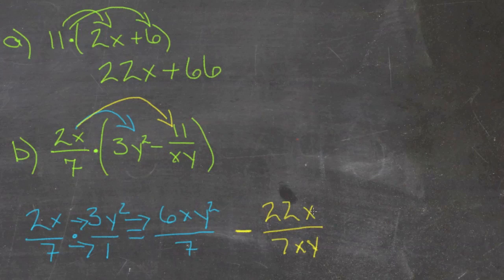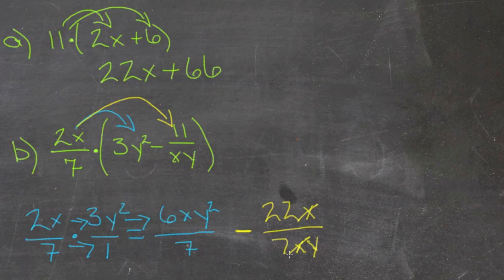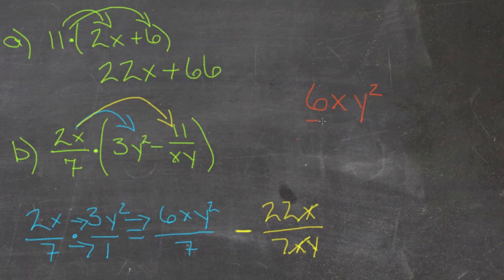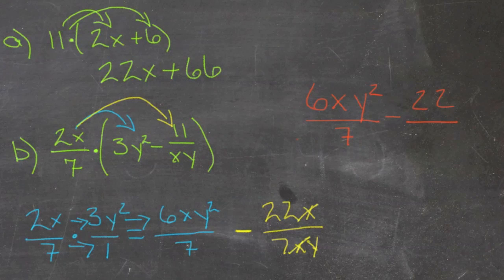Now since we have an x on top and an x on the bottom of our second fraction, we can cancel simplifying, which gives us our final answer. 6xy squared over 7 minus 22 over 7y.